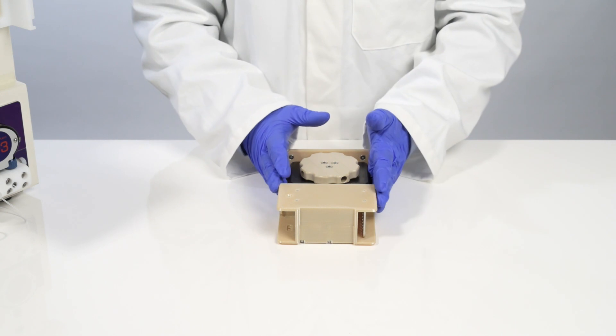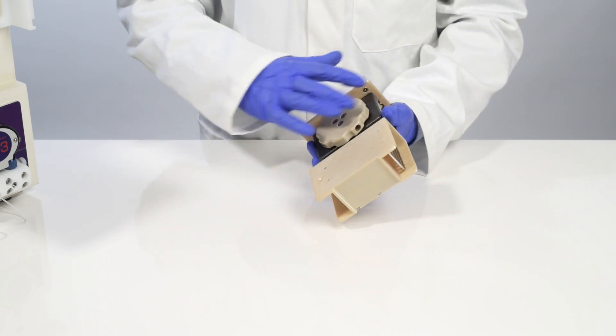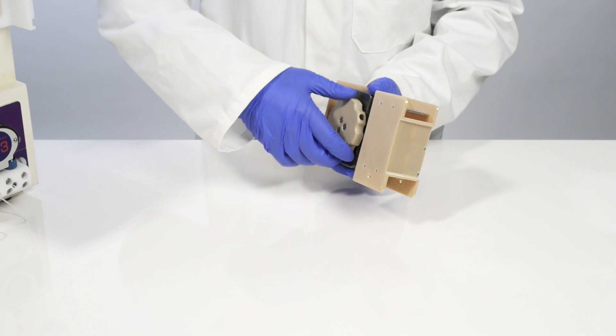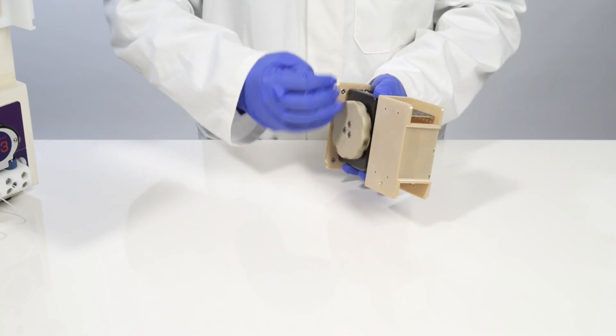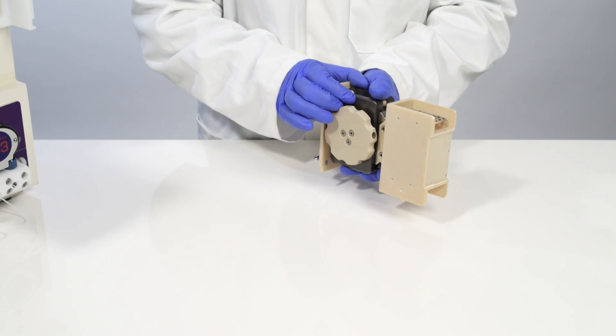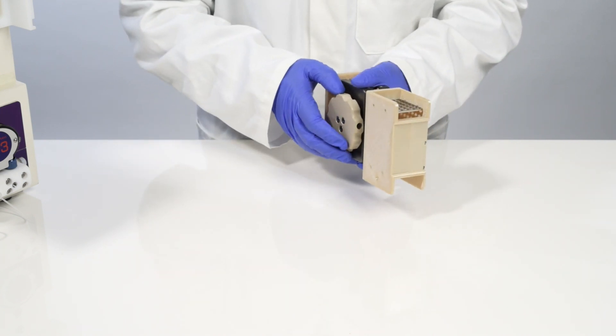Now I've removed the reactor, I'm going to disassemble it so that I can change the configuration inside. To do that I first need to unscrew the clamp. The clamp provides compression to the two plates which enables you to operate the reactor at pressure.